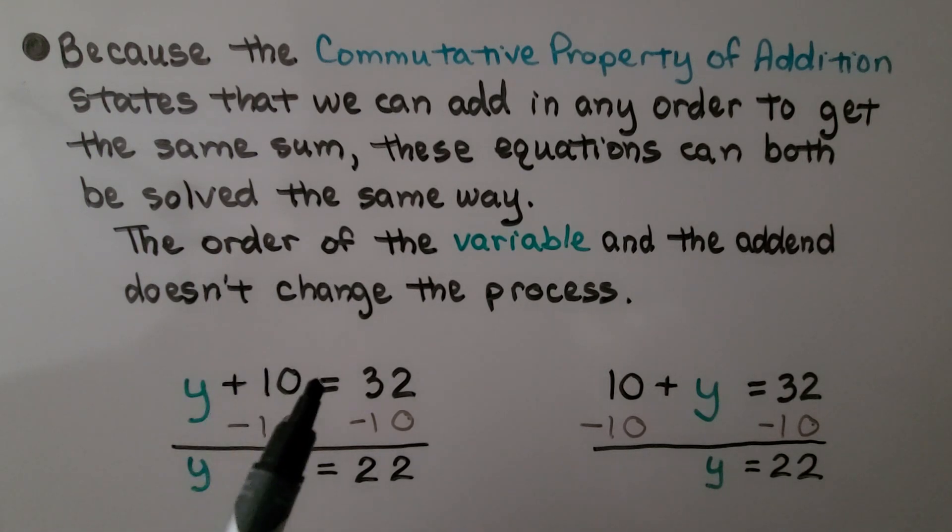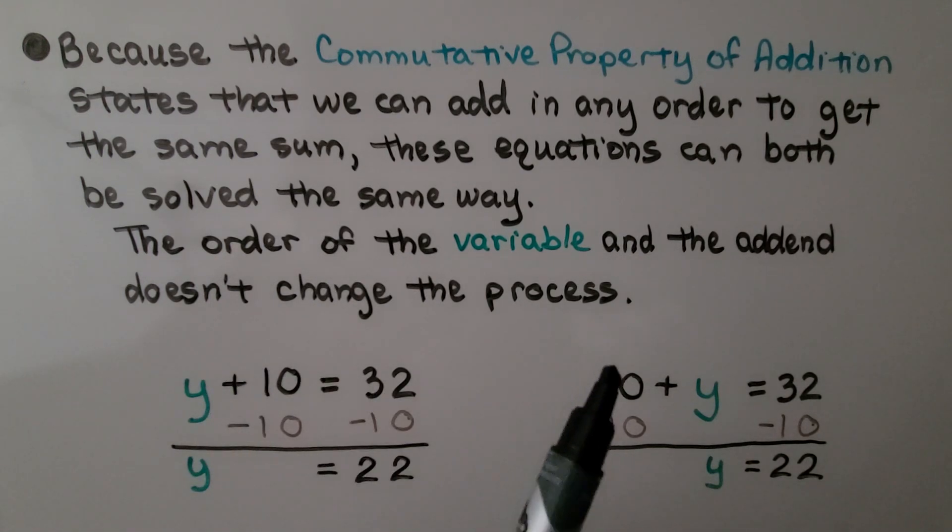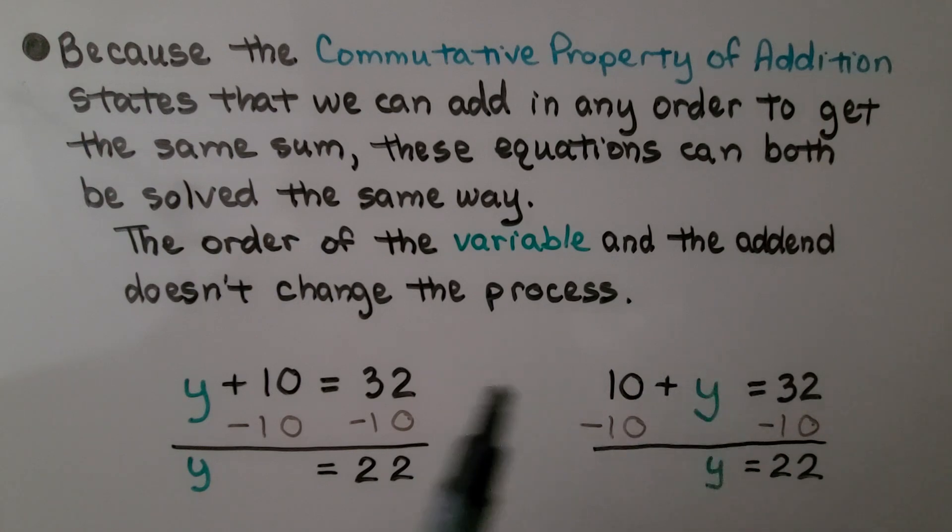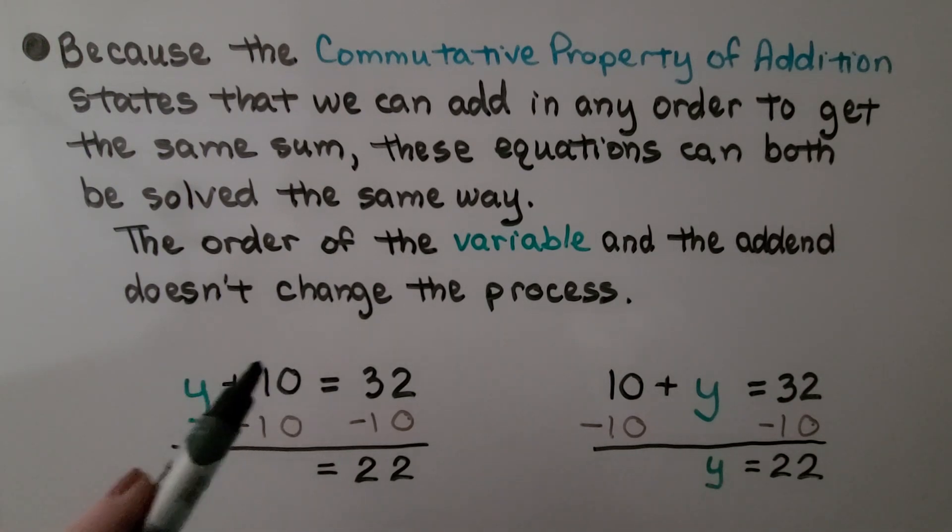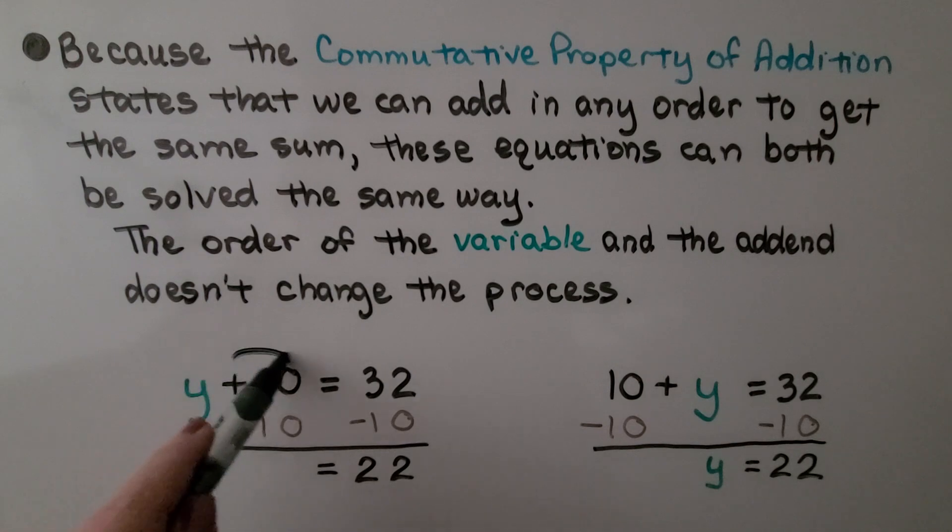We have y plus 10 equals 32, and here we have 10 plus y equals 32. We can add in any order, so it doesn't matter. We are going to try to get the y by itself, isolate it to one side, so we need to get rid of this plus 10. So we can use an inverse and do subtract 10. It is going to get rid of it, make it a zero pair.